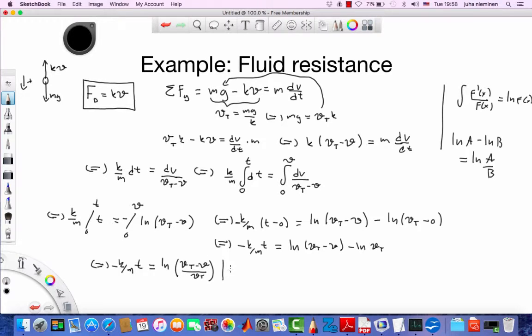And then we raise both sides to the power of e to get rid of the logarithm on the right hand side. So this becomes e to the power of minus k over m times t equals, that just kills the logarithm, so we are left with vt minus v over vt. And multiply to the other side, vt times the exponent equals vt minus v.